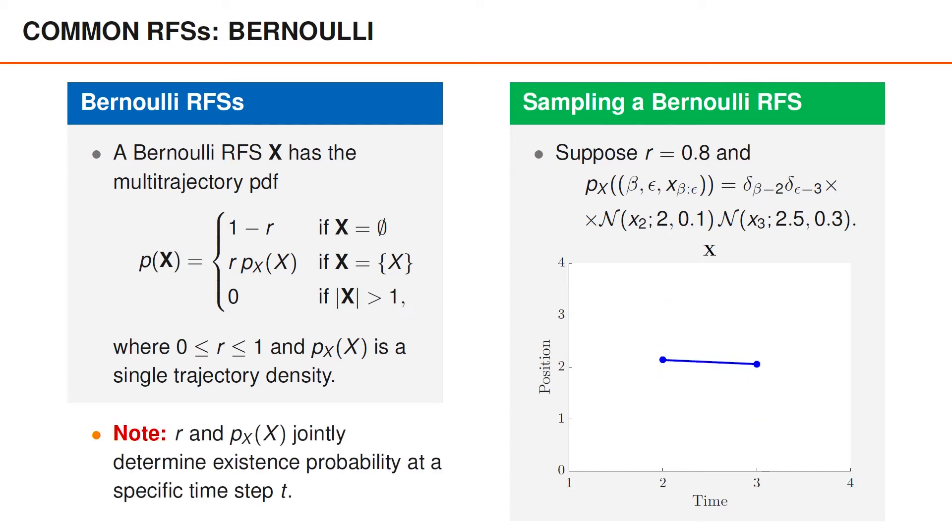One important aspect of these Bernoulli random finite sets is that the parameter r describes the probability that the set contains a trajectory. To determine the probability that the trajectory, and thus the corresponding object, is present at the specific time t, we also need to consider the single trajectory density px. For instance, in the toy example to the right, r is 0.8, but the probability that the trajectory is present at time 1 is still 0.